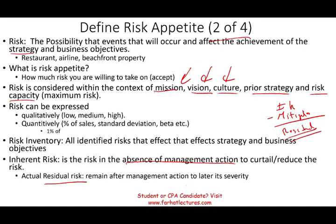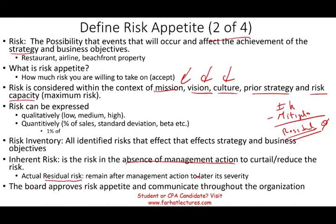Once we mitigate inherent risk, what's left is the residual risk — the risk that remains after management action to alter its severity. We always try to mitigate inherent risk to bring down to the residual risk. We want residual risk to be zero, but that's not really possible in the real world. The board of directors approves the risk appetite and communicates this throughout the organization, so you don't have a rogue manager or department head taking on excessive risk.